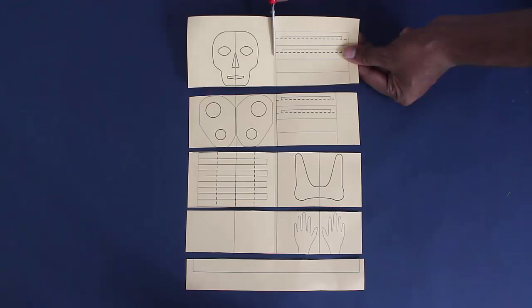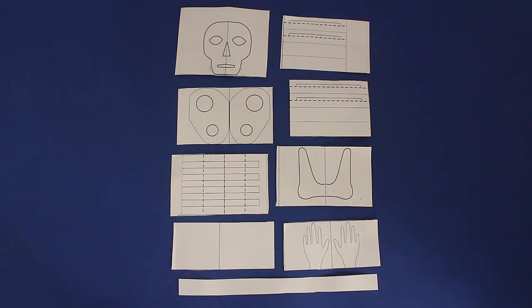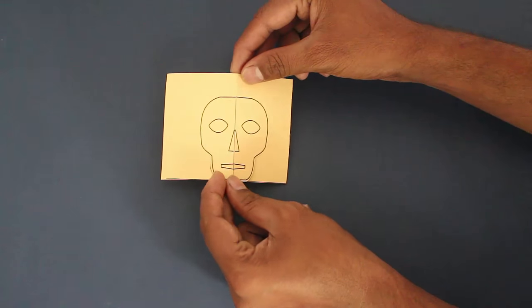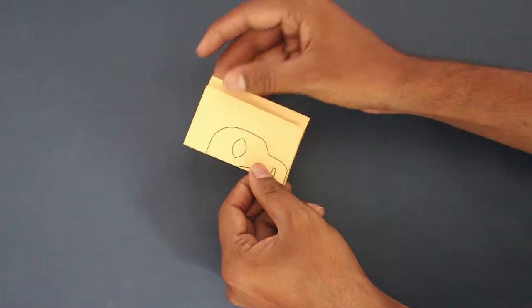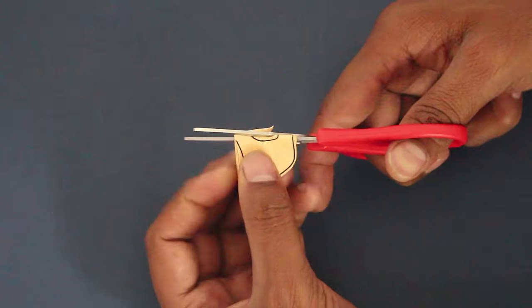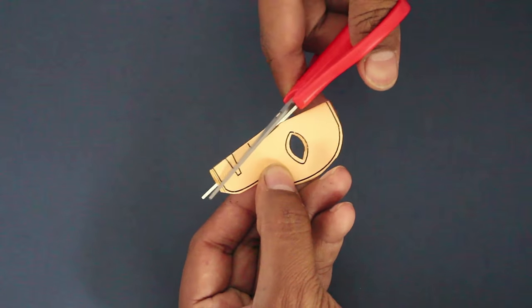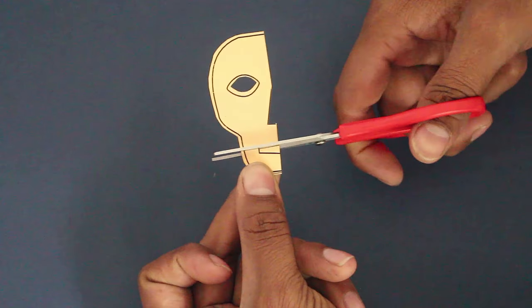Now first fold the skull along its midline and then cut the outline. Also cut the sockets for the eyes, nose and mouth. Now here is the complete skull.